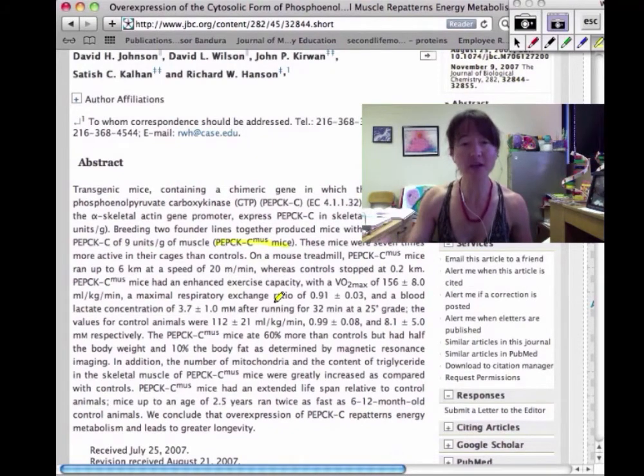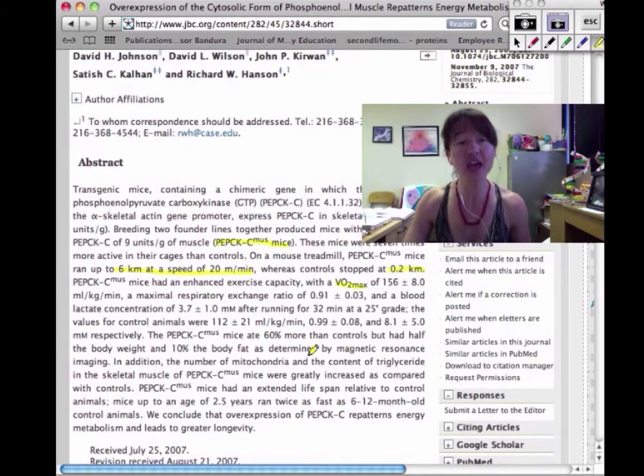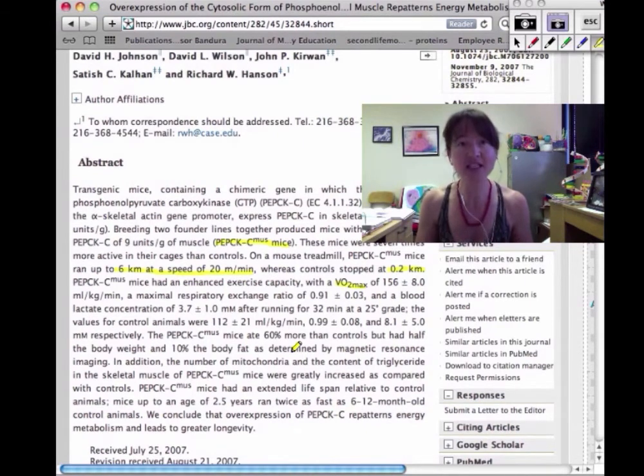And these mighty mice are incredible. Look at, as compared to controls, some of the values that we see. So these mice on a treadmill ran up to 6 kilometers at speeds of 20 meters per minute. Compare this to the control that ran 0.2 kilometers. Check it out. Increased VO2 max. Increased ability to clear lactate. They had enhanced body composition. That is to say that they had half the body weight of those control mice. They had 10% the body fat of control mice. Holy cow! These really are mighty mice.